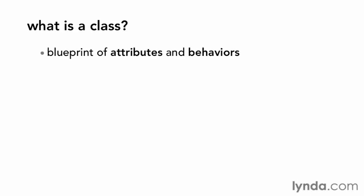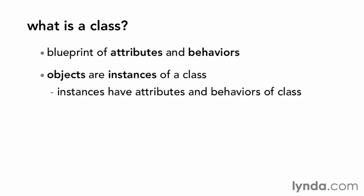A class is a blueprint that defines the attributes and behaviors that make up an object. Objects are instances of a class, meaning each occurrence of an object of a particular class has all the attributes and behaviors of that class. The individual attributes will be the same, but the contents of those attributes may differ.